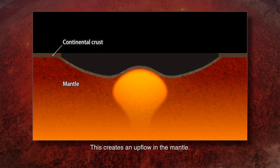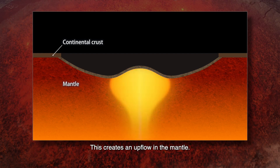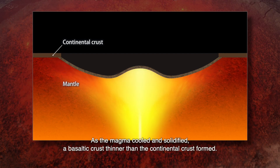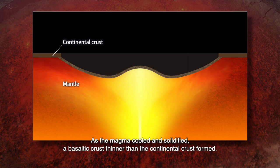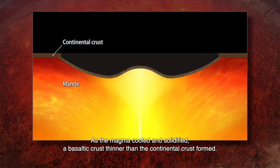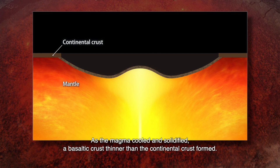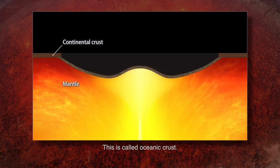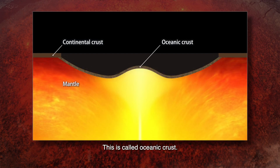This created an upflow in the mantle. As the magma cooled and solidified, a basaltic crust thinner than the continental crust formed. This is called oceanic crust.